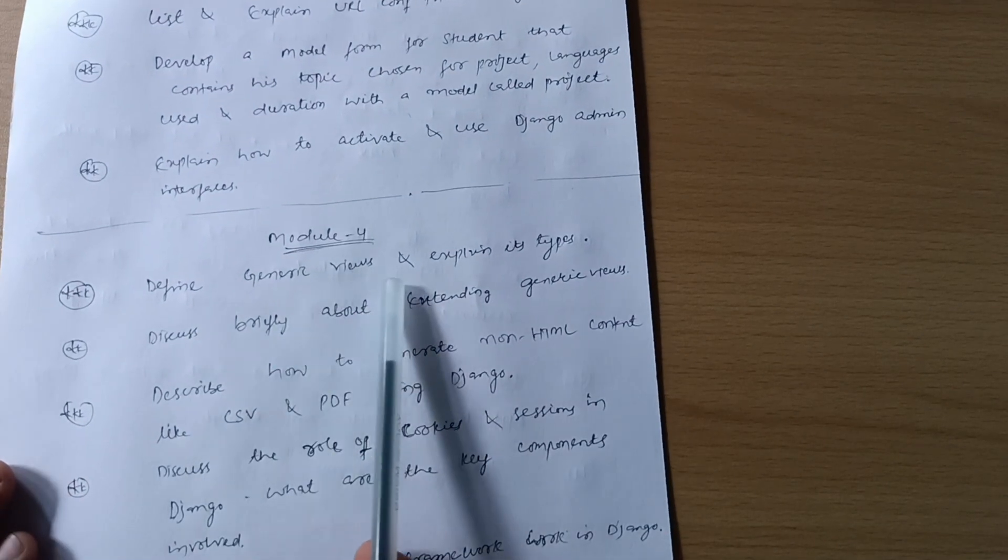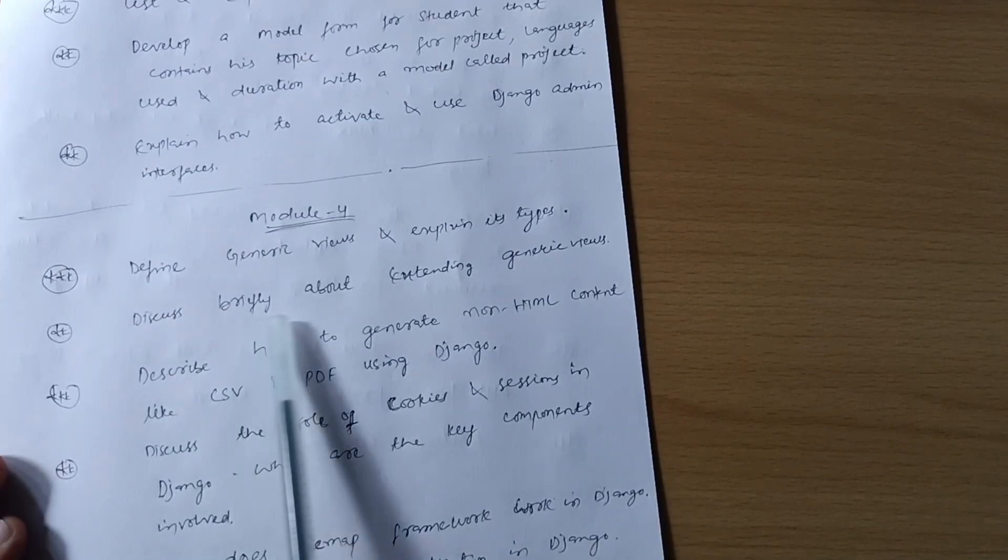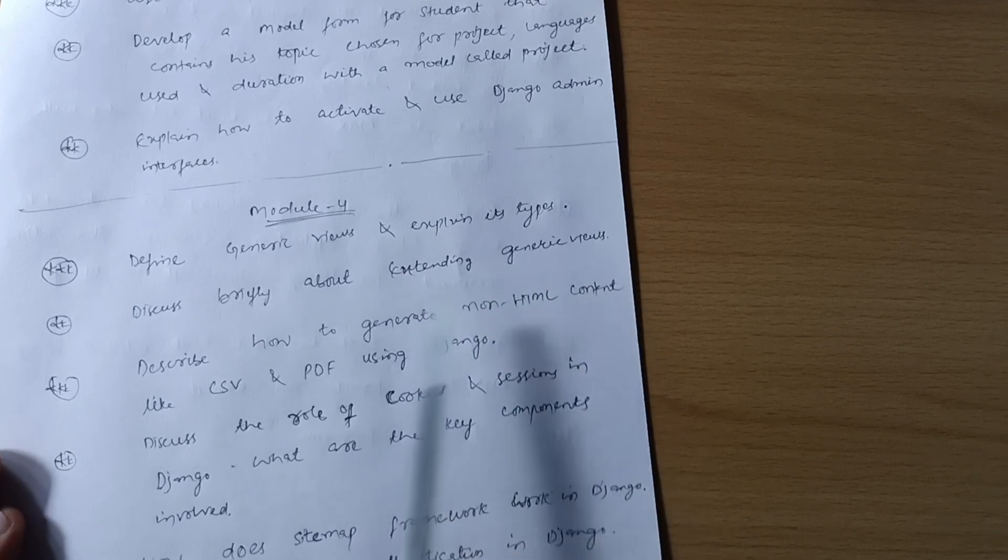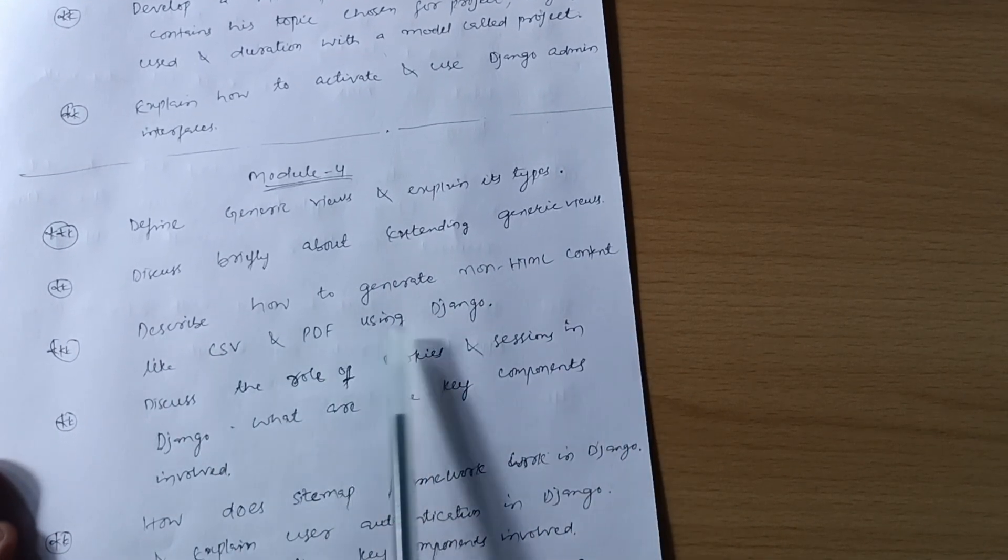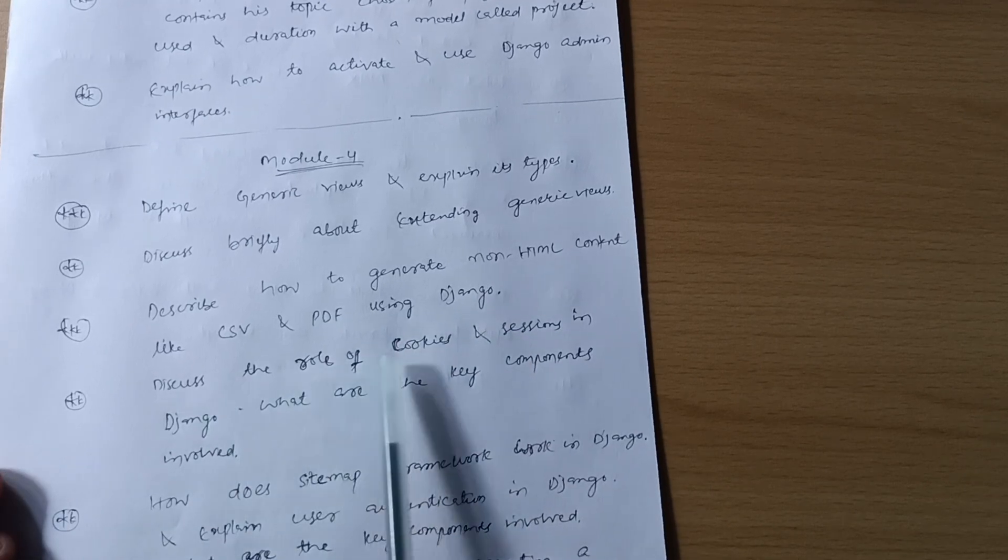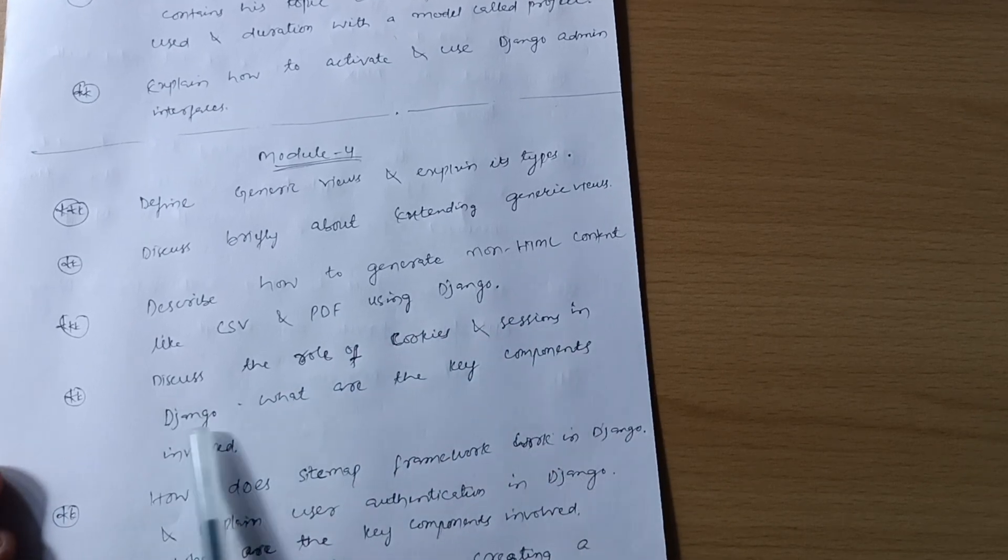Next is Module 4. Define generic views and explain its types. Briefly discuss about extending generic views. Describe how to generate non-HTML content like CSV and PDF using Django.